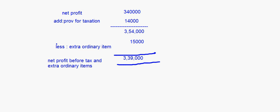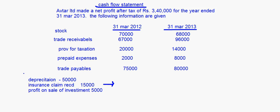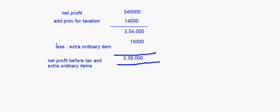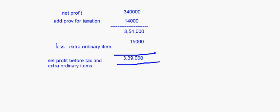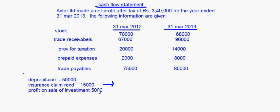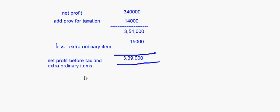In the first step, we took the net profit of 3,40,000. To that we added the provision for taxation of the current year. The provision for taxation is given for both years - previous and current - and you take it for the current year, so 14,000 is added. Less the extraordinary item, which is the insurance claim receipt of 15,000. So we got net profit before tax and extraordinary items as 3,50,000.